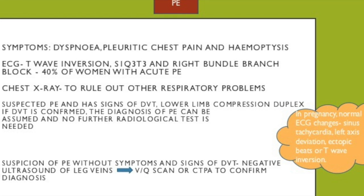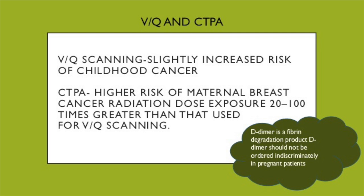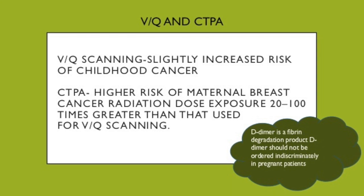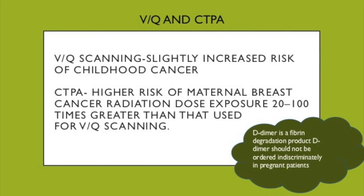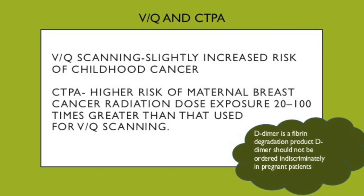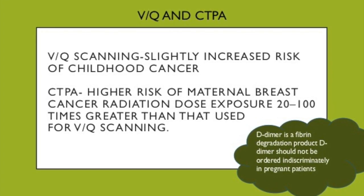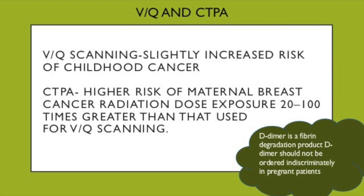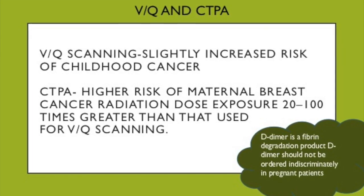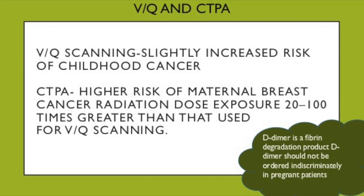In pregnancy, normal ECG changes include sinus tachycardia, left axis deviation, ectopic beats, or T-wave inversion. Regarding imaging, VQ scanning slightly increases the risk of childhood cancers, while CTPA exposes the mother's breast to an increased dose of radiation, about 20 to 100 times greater than a VQ scan. D-dimer is a fibrin degradation product and should not be ordered indiscriminately in pregnant patients.